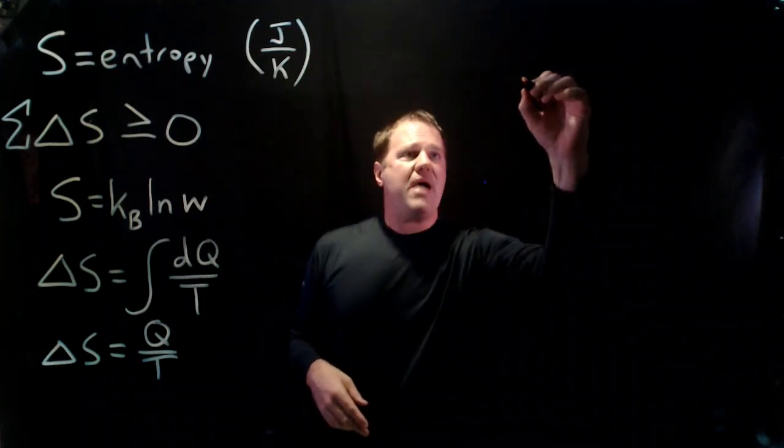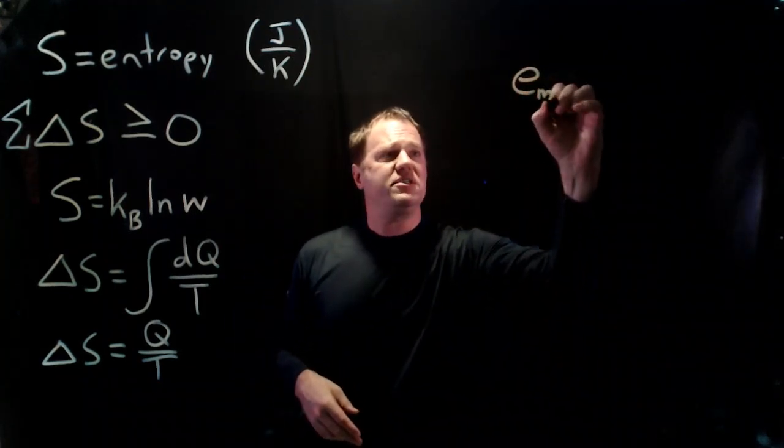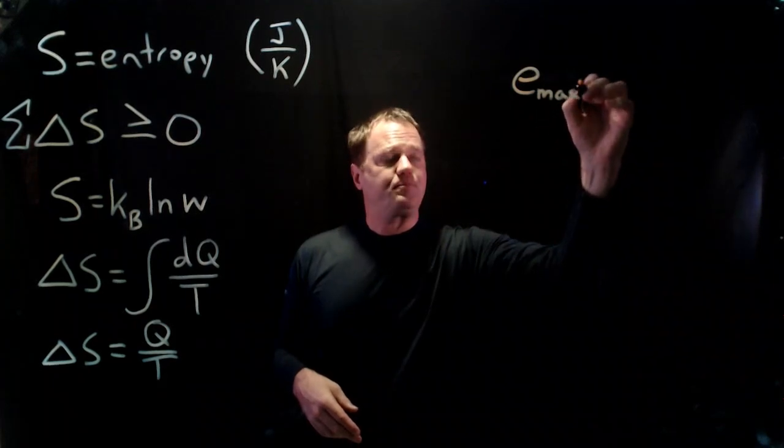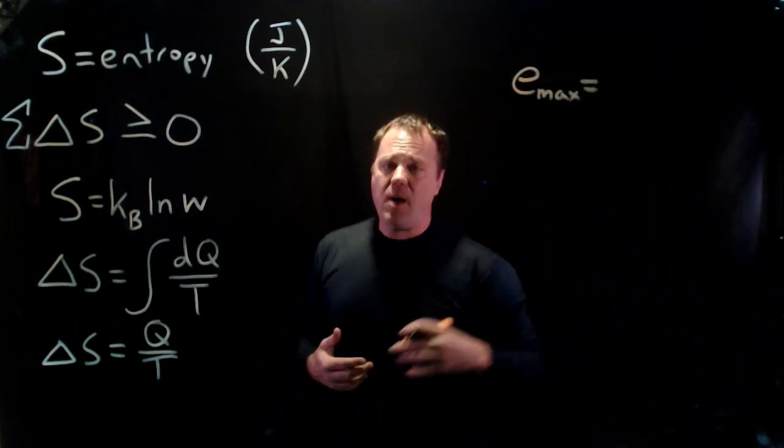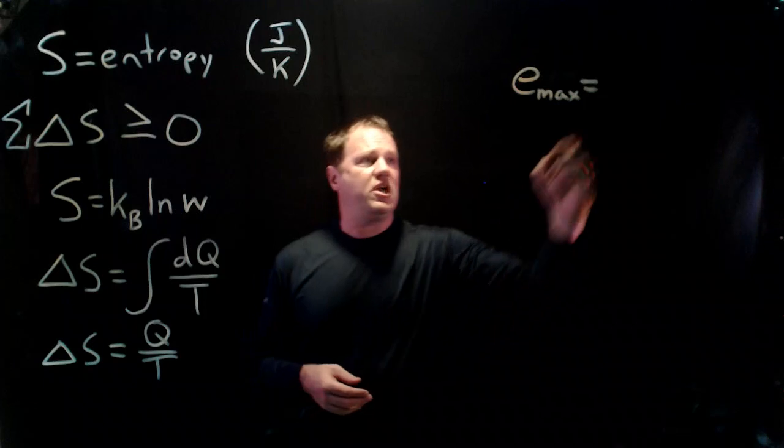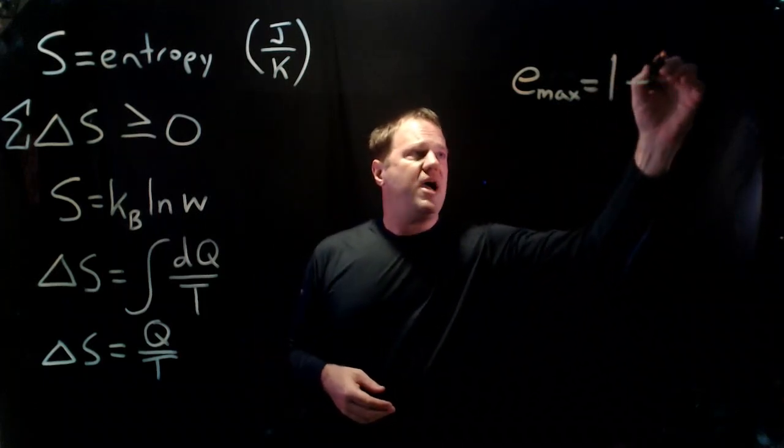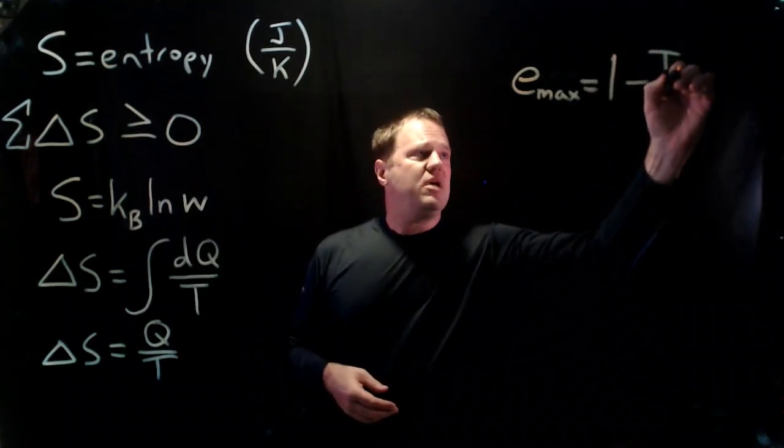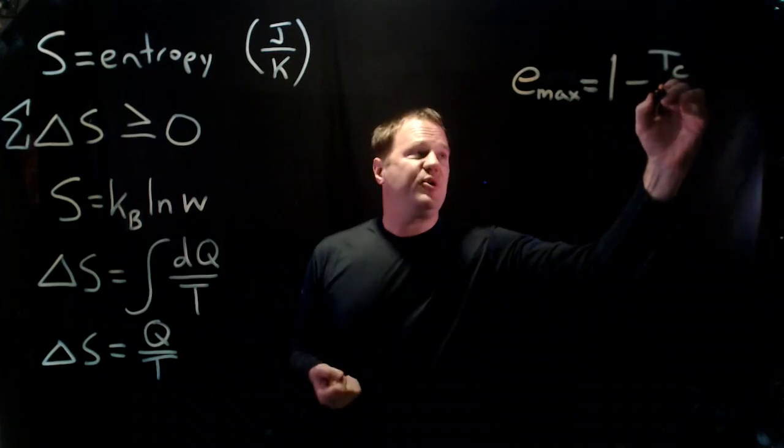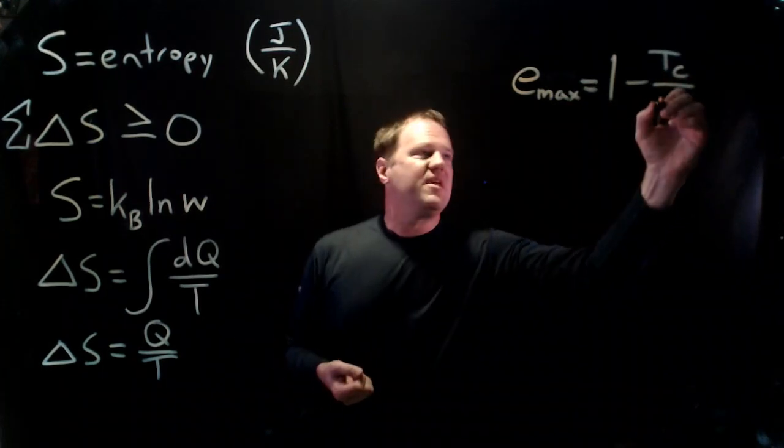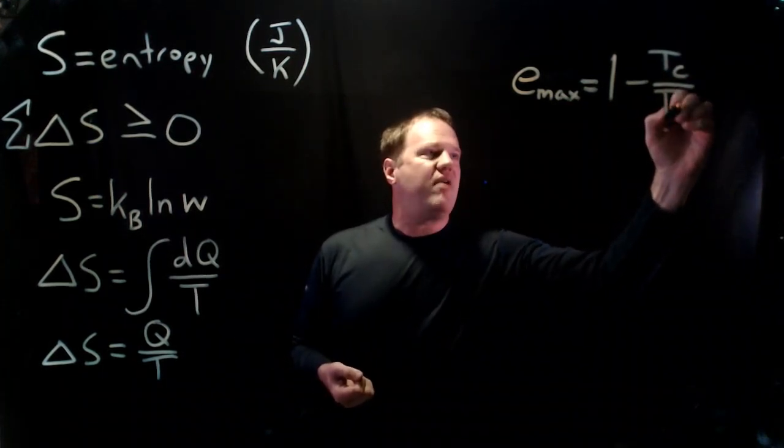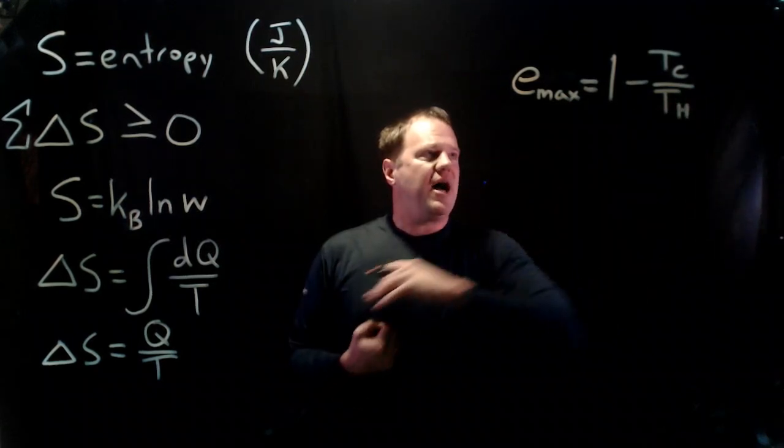So the maximum possible efficiency of a heat engine operating between two temperature extremes is equal to this. It's one minus the low temperature, or the temperature of the external cold system that's interacting with the heat engine, divided by the high temperature system.